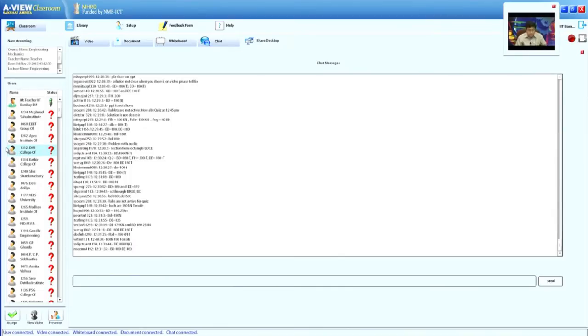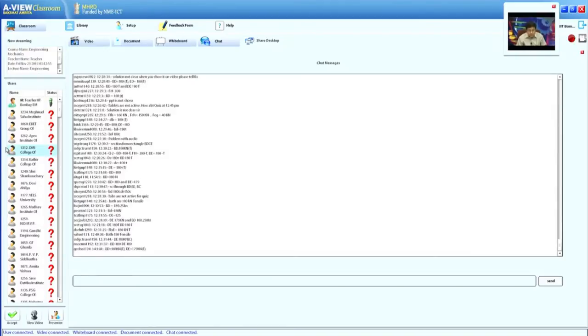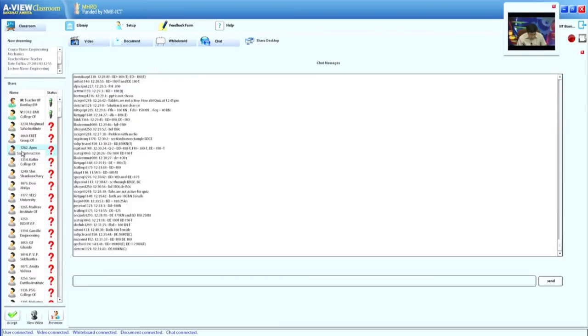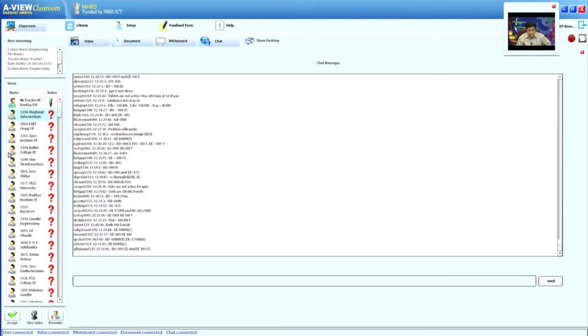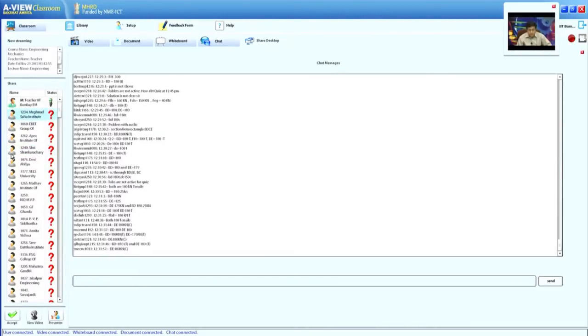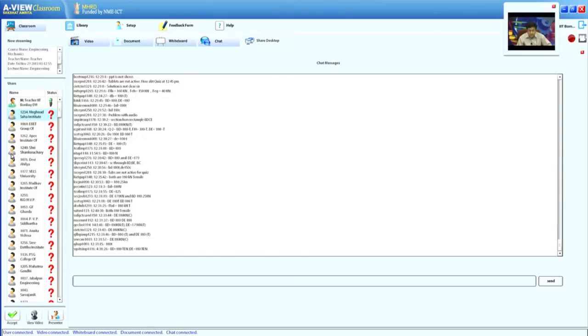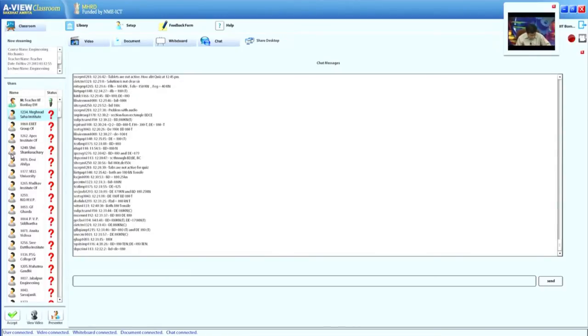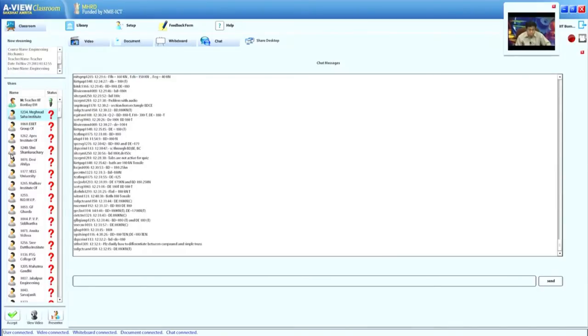I am getting answers from different centers. Yeah, both BD and DE will be tensile force and their answer is 180 kN. Both BD and DE, they are tensile in nature and magnitude is 180 kN. Someone just wrote 180 kN compression, that is not correct. Should be tensile force.